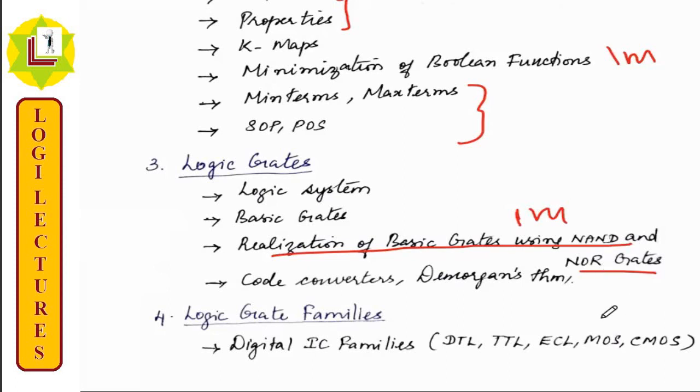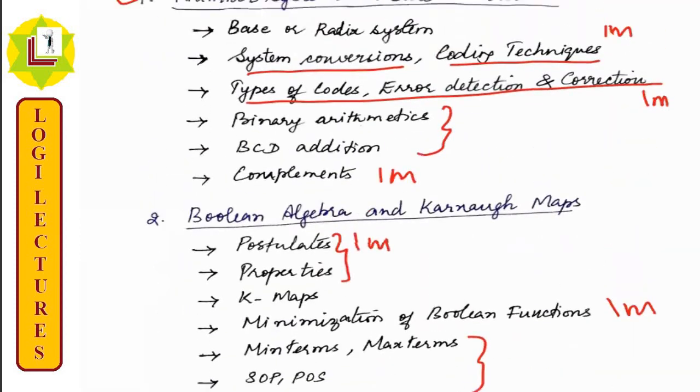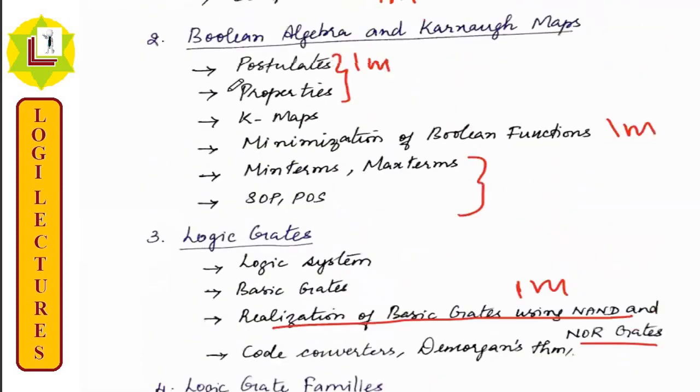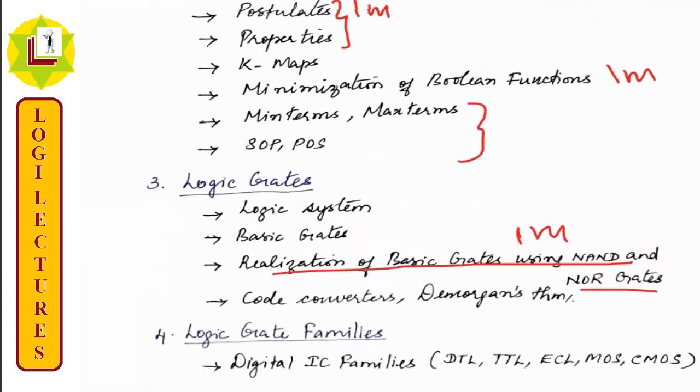This is code converters. Code conversion can be used. Code converters can be designed for every gate to use. DeMorgan's can be applied for the gates. And in the conversion field, whatever possible, any functions, they can be realized in the unit.